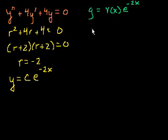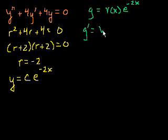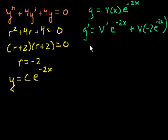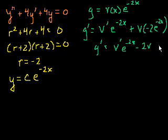Before substituting, let's get the first and second derivatives. For g', we apply the product rule — dropping the explicit 'of x' notation since v is understood to be a function. The derivative of the first times the second gives v'·e^{-2x}, plus the first times the derivative of the second gives v·(minus 2)·e^{-2x}. So g' equals v'·e^{-2x} minus 2v·e^{-2x}.